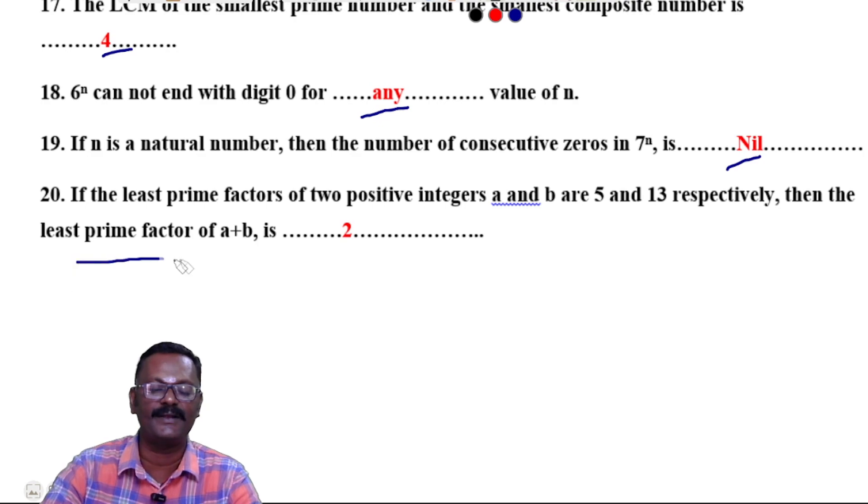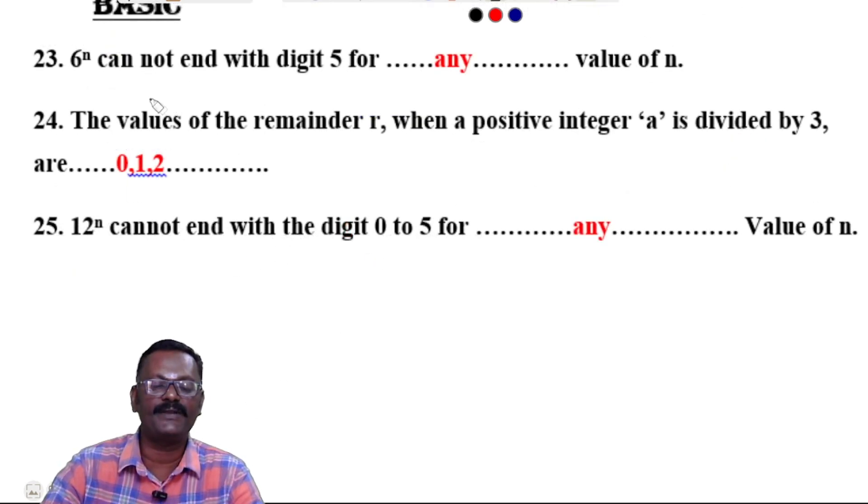Question 23: 6^n cannot end with the digit 5 for any value of n. Question 24: The values of the remainder r when a positive integer a is divided by 3 are 0, 1, 2.